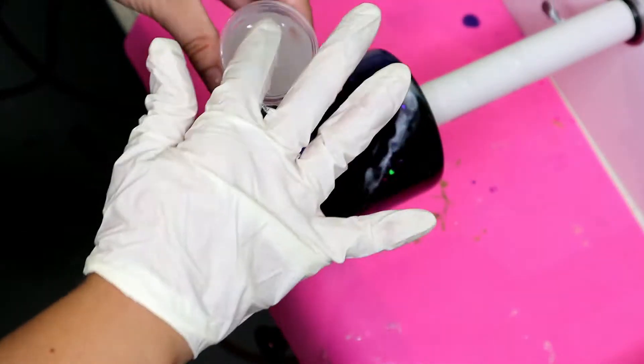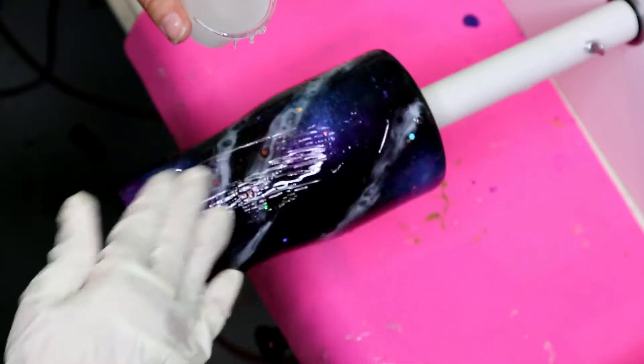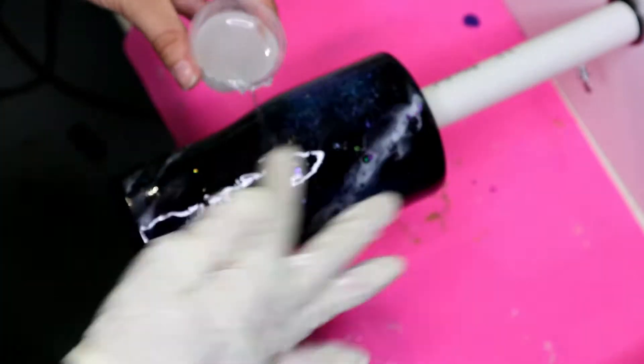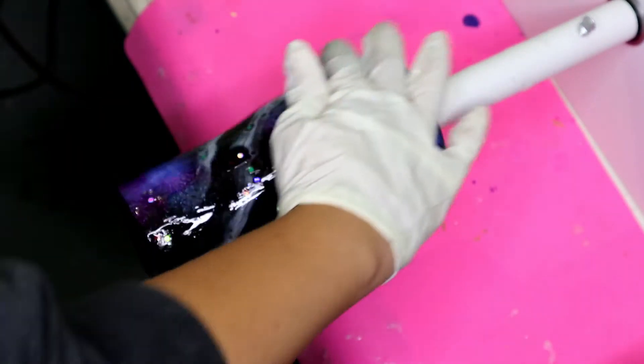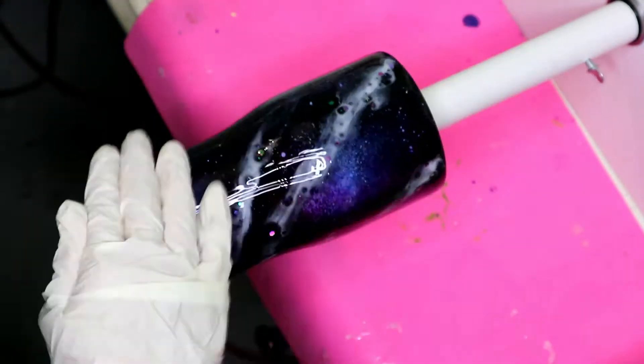After that layer of epoxy spins for about eight to ten hours, you are ready for your next layer. And for this layer, I went in with a layer of Fast Set. This layer is just to cover up the glitter pieces so it dries really fast and then you're able to sand and move on to the next step. That's why I love Fast Set so much.